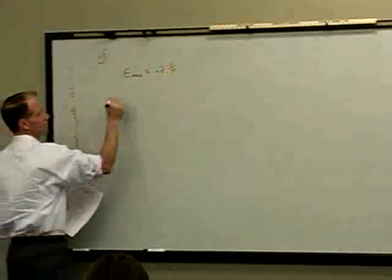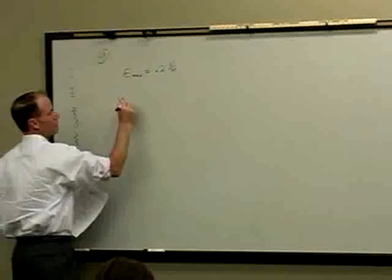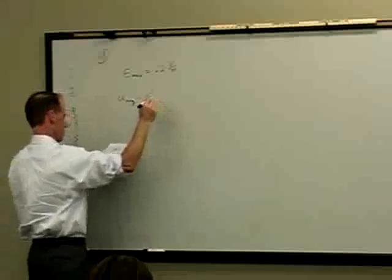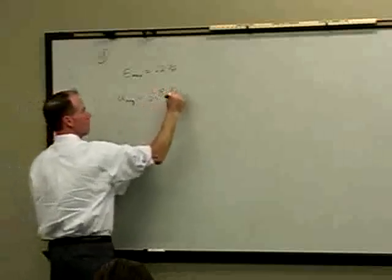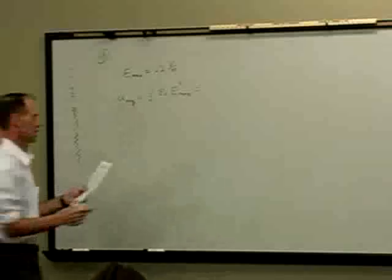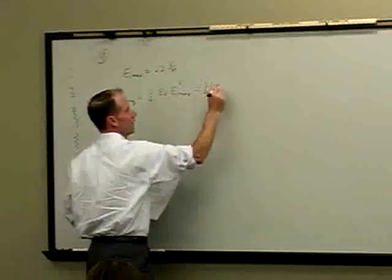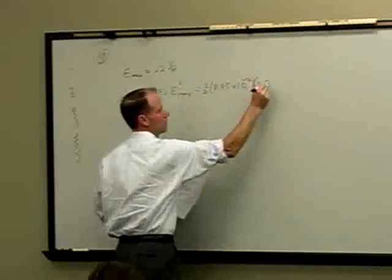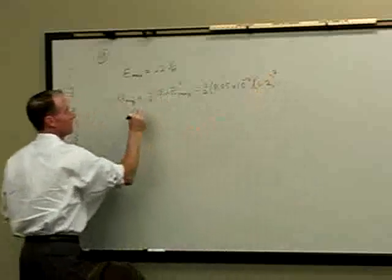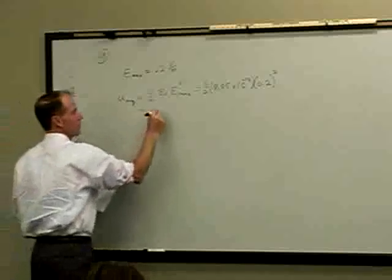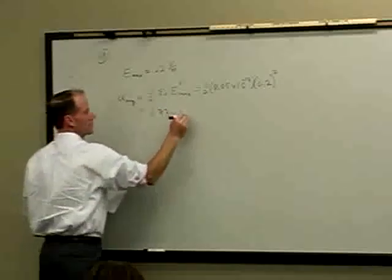So we can get the average energy density of that signal. It has one-half epsilon-naught times the maximum amplitude squared, so we have one-half times 8.85 times 10 to the minus 12, times 0.2 volts per meter squared. That gives us an energy density of 1.77 times 10 to the minus 13.